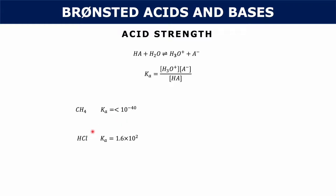On the other hand, strong acids dissociate a lot, so your product concentrations would be really high but your reactant concentrations really low — your numerator is high and your denominator is low, producing a high Ka value. So Ka can be used to quantify how acidic a substance is.